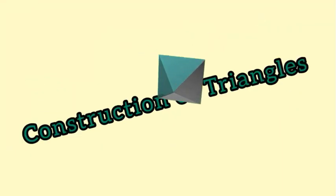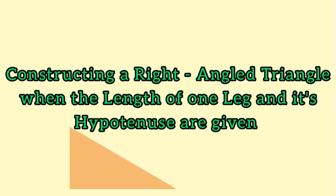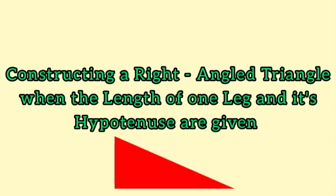In our previous class we considered the construction of some triangles. Today we are going to consider constructing a right-angled triangle when the length of one leg and its hypotenuse are given.